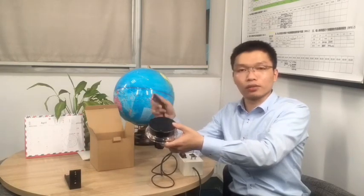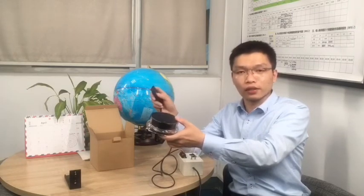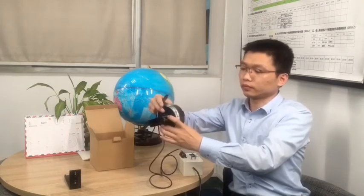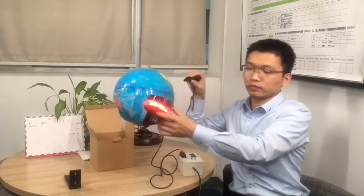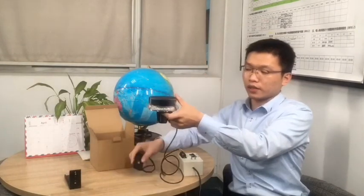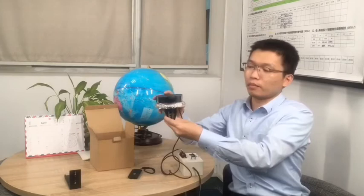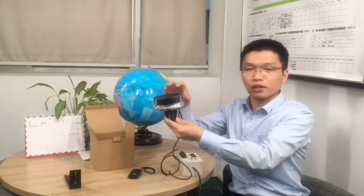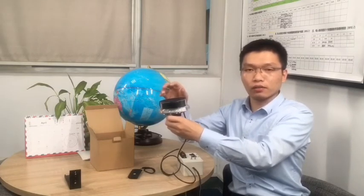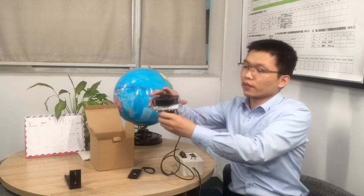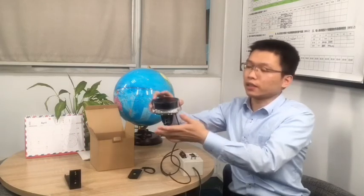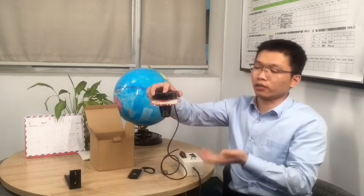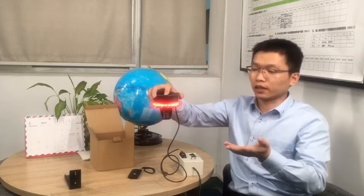First, we need to switch to another function using the remote. This is LED flashing light, LED policing light, controlled by the light sensor. By day, it will automatically turn off. At night, if we block the light sensor, it will automatically turn on and start LED light flashing.